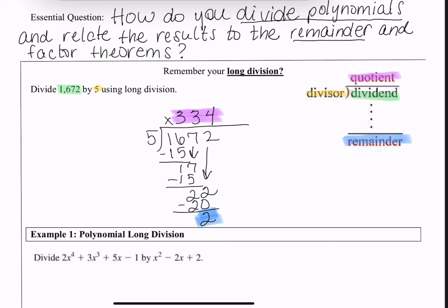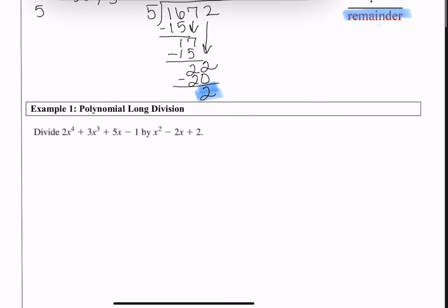There are other ways to write this. For example, 1,672 divided by 5 could be written as a fraction. We know that equals 334 with a remainder of 2, or we could write it as 334 and 2/5 — you put your remainder over your divisor. Hopefully that was a nice review, because we are about to do this with polynomials.